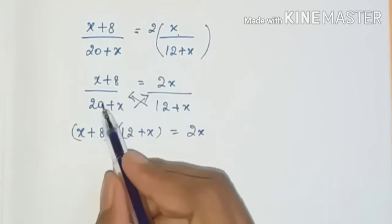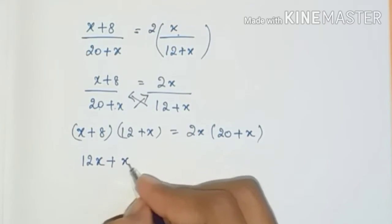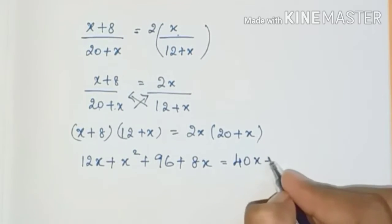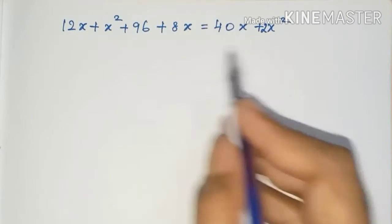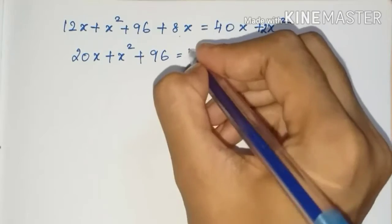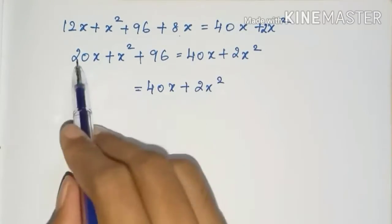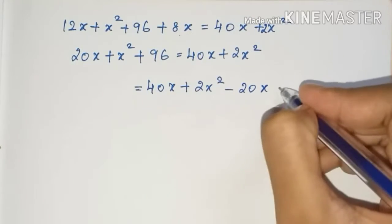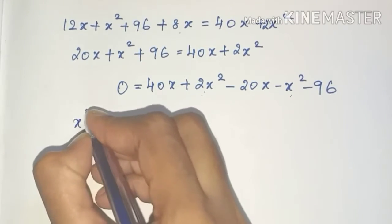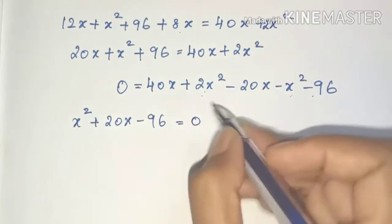Expanding: x times 12 is 12x, x times x is x squared, 8 times 12 is 96, 8 times x is 8x. Right-hand side: 2 times 20 is 40x, 2x times x is 2x squared. Combining: 20x plus x squared plus 96 equals 40x plus 2x squared. Rearranging: x squared minus 20x plus 96 equals 0.